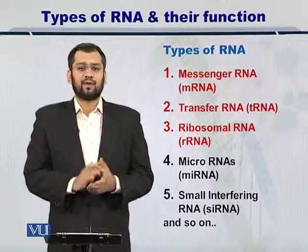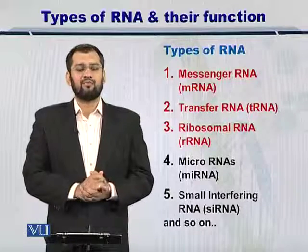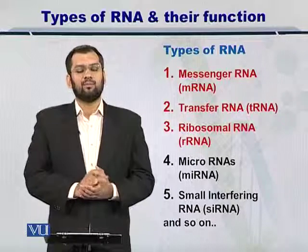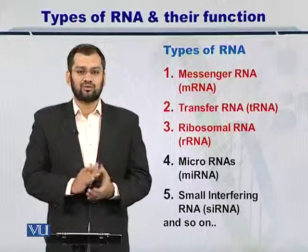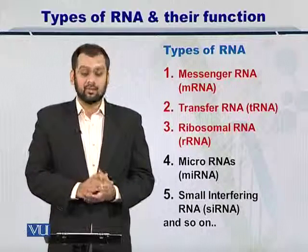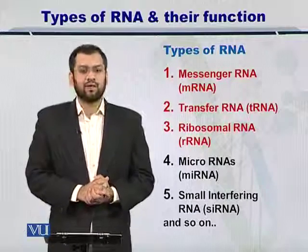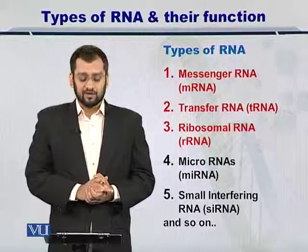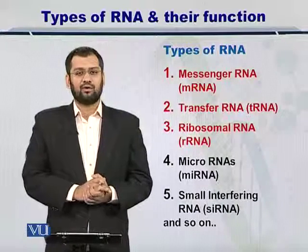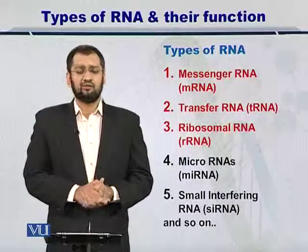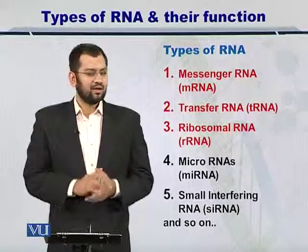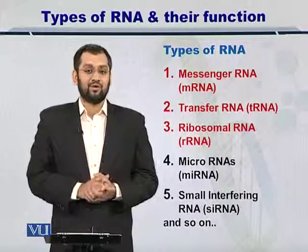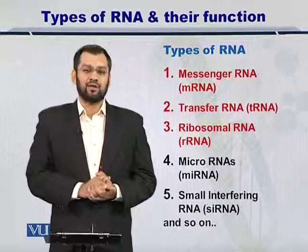Broadly speaking, there are five to six types of RNAs that fall into the categories of coding and non-coding RNAs. The most important one, which we will also focus on later today, is the messenger RNA, commonly called mRNA. Besides mRNA, there are other types such as transfer RNA or tRNA, ribosomal RNA or rRNA, as well as micro RNAs and small interfering RNAs. Don't be misled by the name 'small interfering RNAs' — they also have very important roles within biological systems.